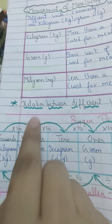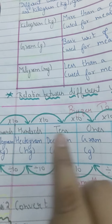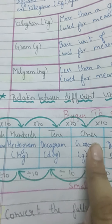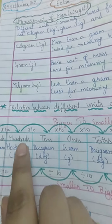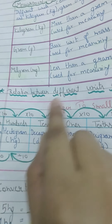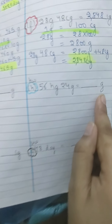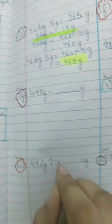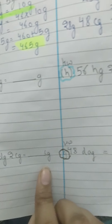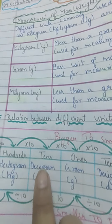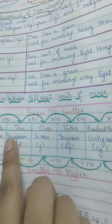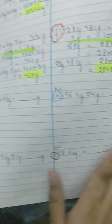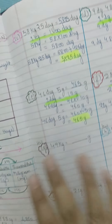Some quick reference conversions: kg to gram is 3 jumps, so 1 kg = 1,000 grams. Hectogram to gram is 2 jumps, so 1 hectogram = 100 grams. Decigram to centigram is 1 jump, so 1 decigram = 10 centigrams. Decagram to centigram is 3 jumps, so 1 decagram = 1,000 centigrams. Use these to solve the remaining questions.